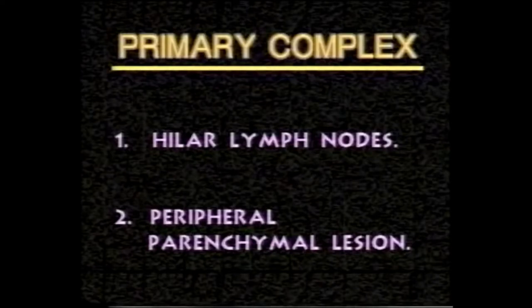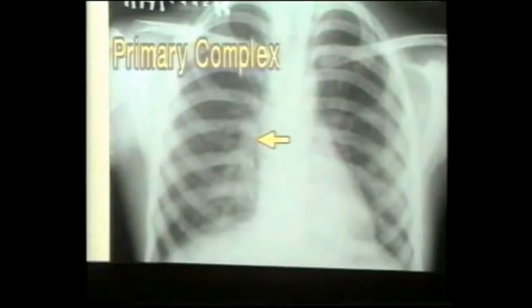Primary complex is a primary tuberculosis infection seen in children. Radiologically it shows two components: a peripheral parenchymal lesion and enlarged hilar lymph nodes. This is an X-ray of a primary complex — note the increased density in the hilar region. These are hilar lymph nodes seen as well-defined nodular dense radio-opacities in the region of the hilum, in line with the parenchymal lesion. The blue arrow shows the parenchymal infiltration in the lower lobe.